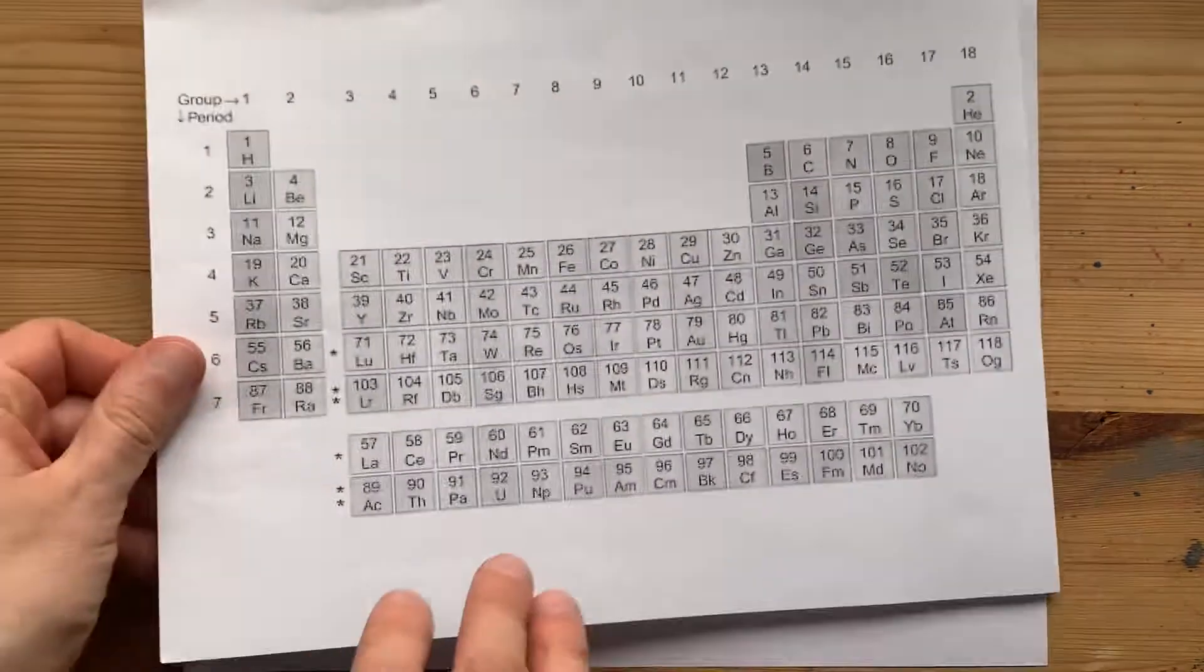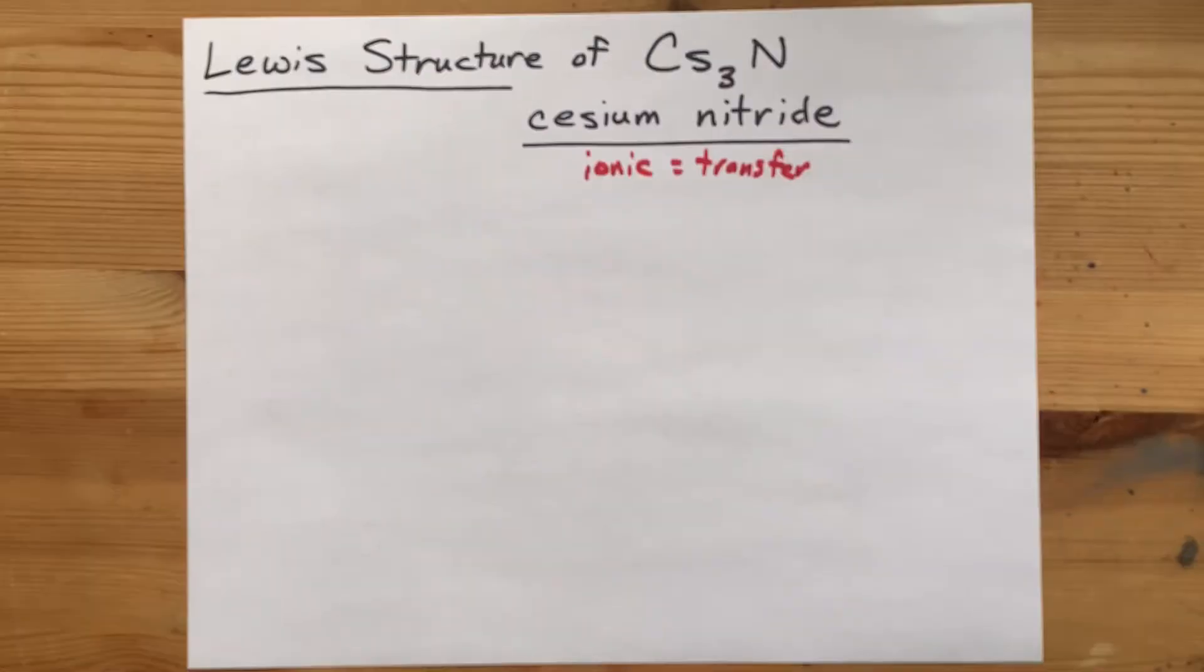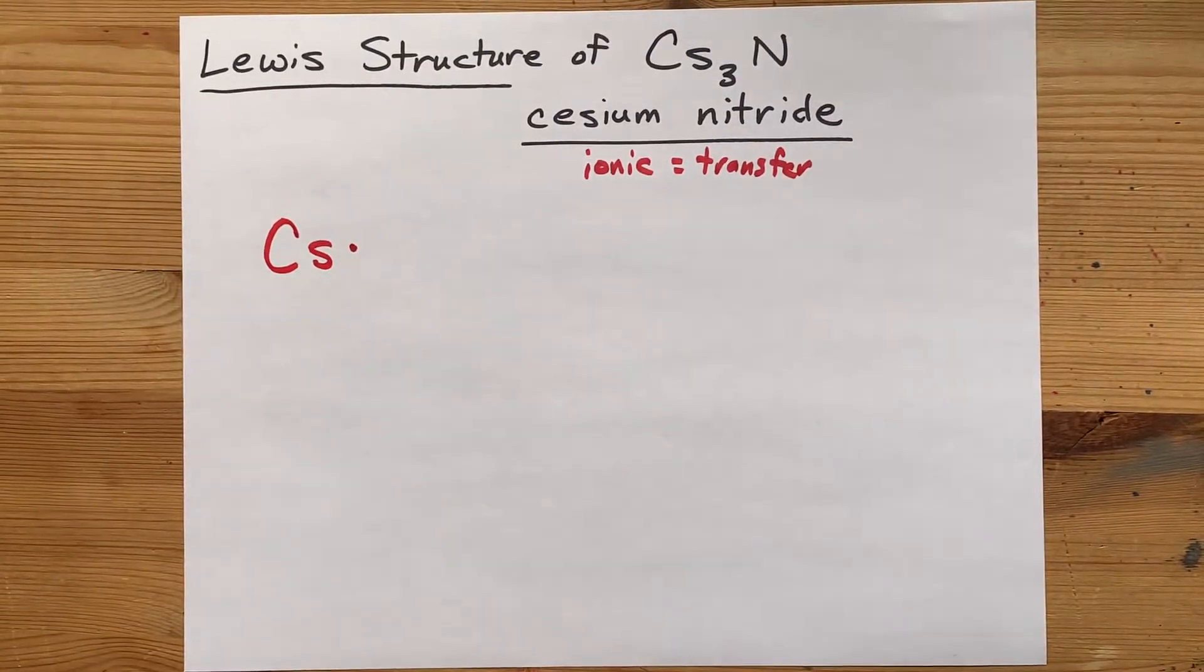What electrons, you might ask? Well, cesium is in group one. So each cesium atom is drawn with one valence electron to start with.